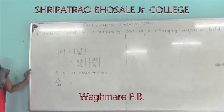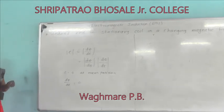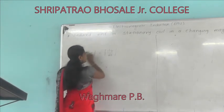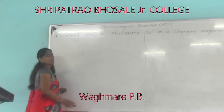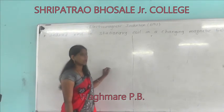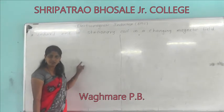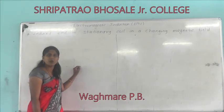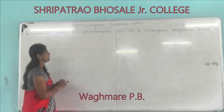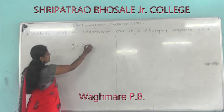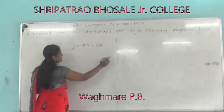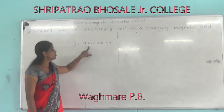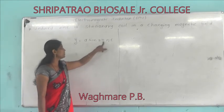Now we discuss the second term, dθ/dt. This can be derived from the equation of oscillation. In the oscillation chapter, we discussed the displacement of a particle: y = A sin(2πnt), where A is the amplitude, n is the frequency, and t is the time.